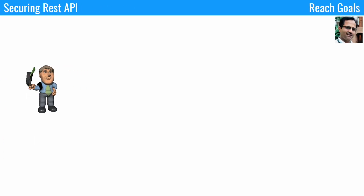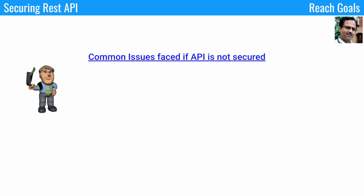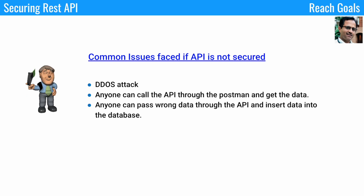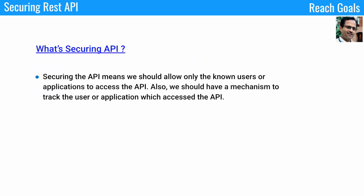Before knowing how to secure the API, we need to know what are the common issues faced if you're not securing the API. The number one issue is a DDoS attack. The second is anyone can call the API through Postman and get the data. The third one is anyone can pass wrong data through the API and insert incorrect data into the database.